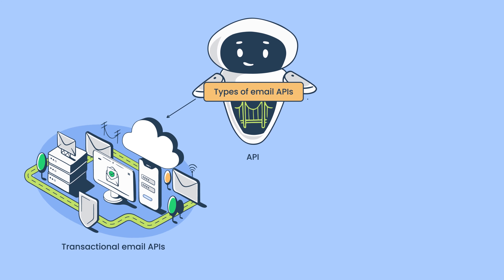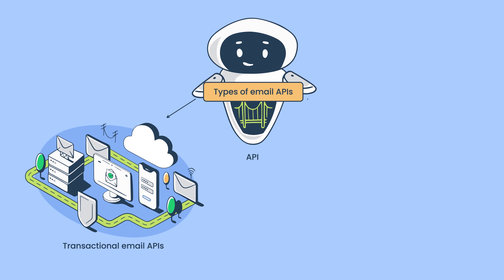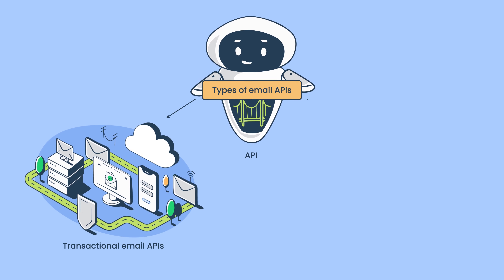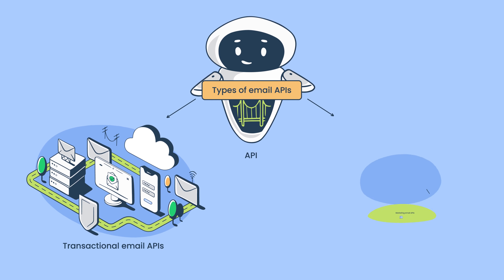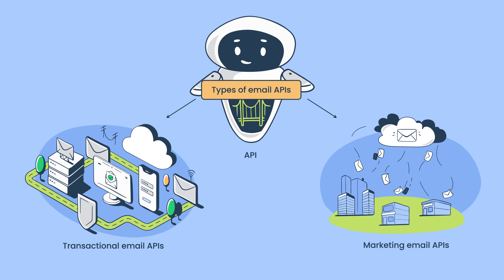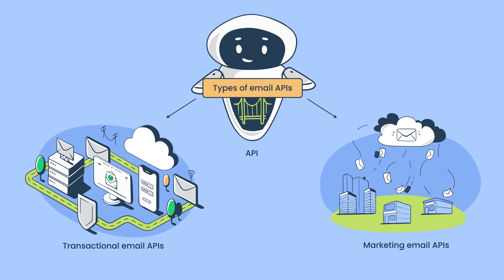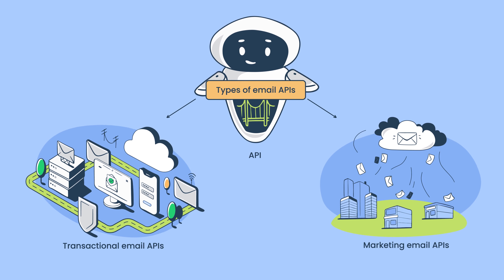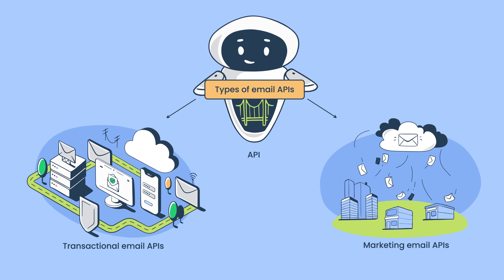Email APIs have two main types: transactional email APIs, which are used to design and send system notifications triggered by user actions, and marketing email APIs, which allow for integrating email marketing features such as contact management or list retrieval, for example.